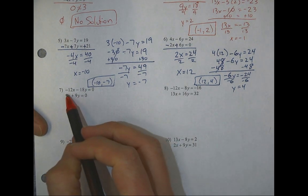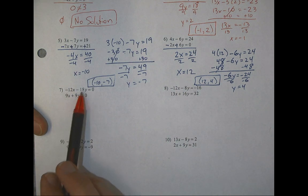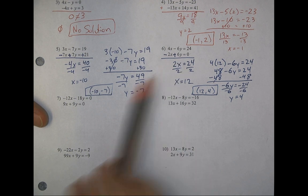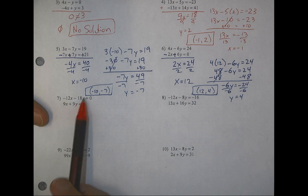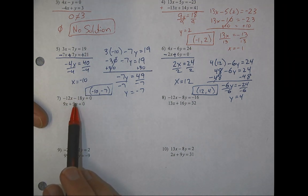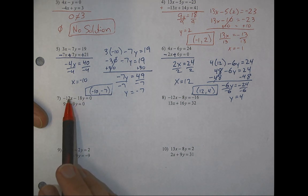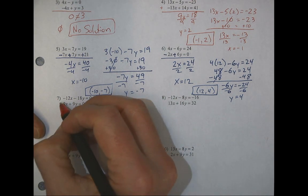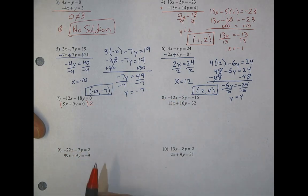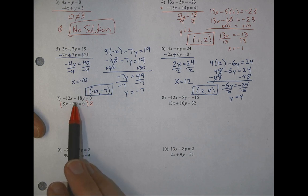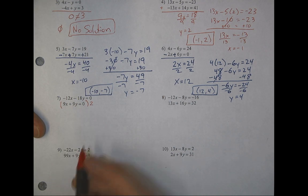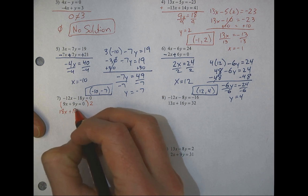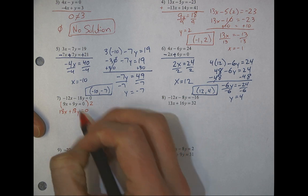For number 7, I don't have any numbers set up to cancel or even close. I can't just change a sign to make something work. What I do see is that I can make 9 into 18, which will cancel with the negative 18. I can't make 9 into 12, but I can multiply by 2. Since this one is negative, I want the result to be positive so they cancel, so I multiply by positive 2.